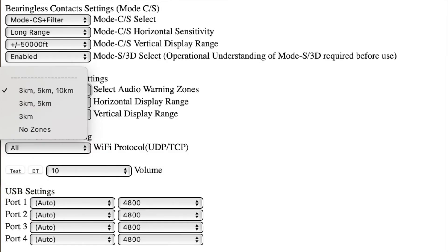PilotAware will also give audio warnings and you can select the Audio Warning Zones from the drop-down menu. The choice steps down from 10km to 3km, or you can turn off voice alerts entirely by selecting No Zones. This configuration only affects PilotAware voice alerts and does not stop voice alerts coming from your electronic flight pack if they are provided by your supplier such as SkyDaemon.